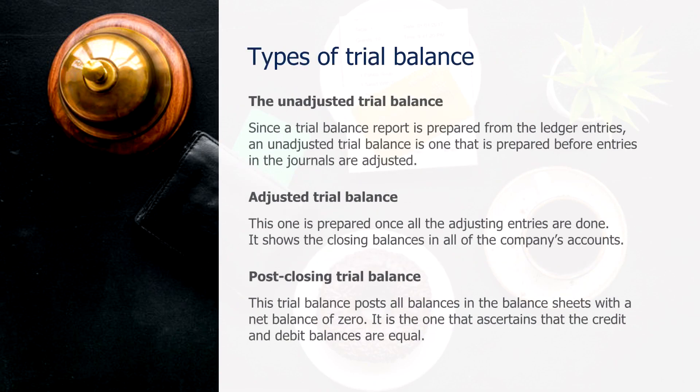Types of trial balance: an unadjusted trial balance is one that is prepared before entries in the journals are adjusted. An adjusted trial balance is prepared once all the adjusting entries are done. A post-closing trial balance posts all balances in the balance sheets with a net balance of zero.